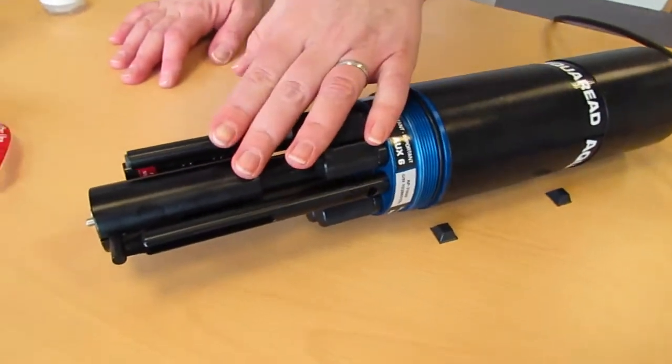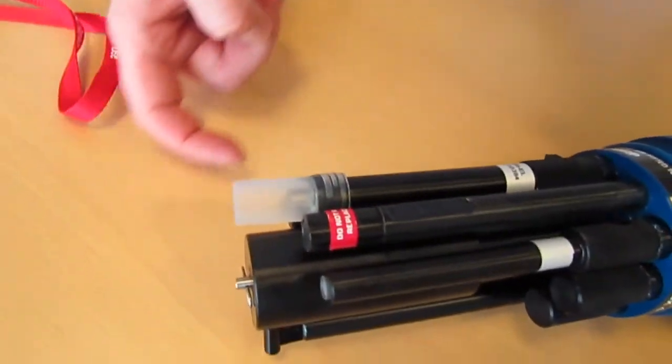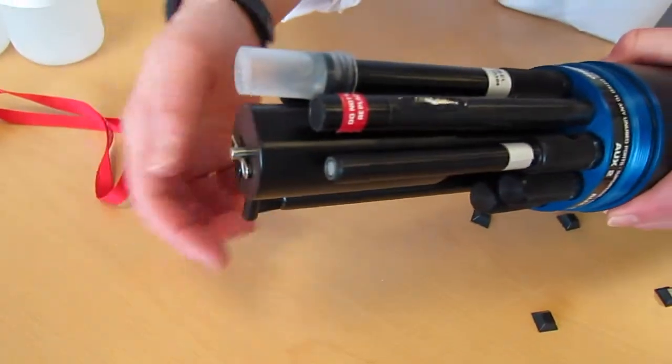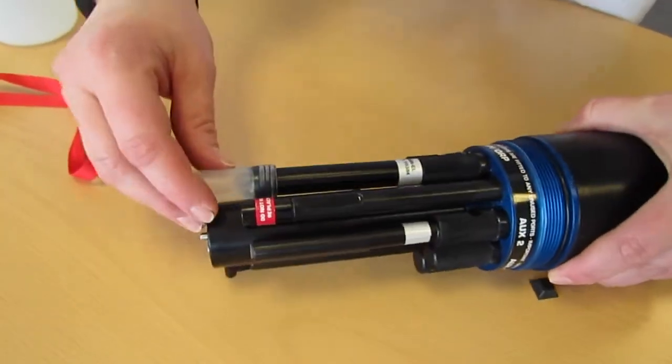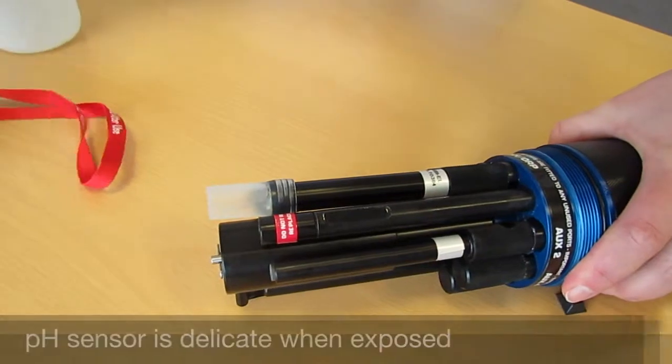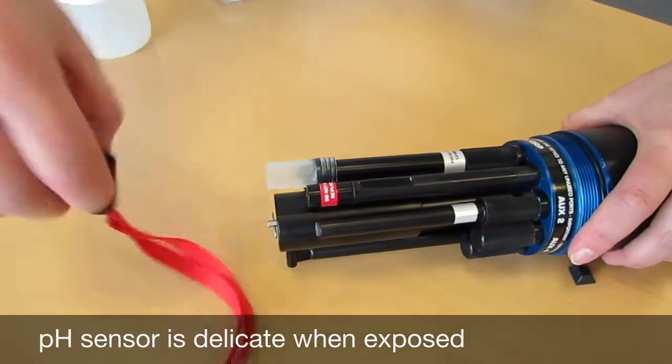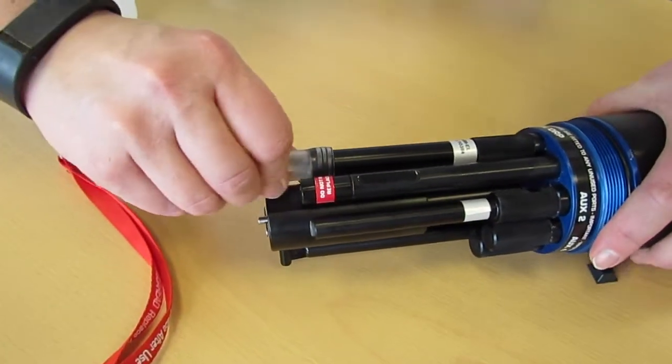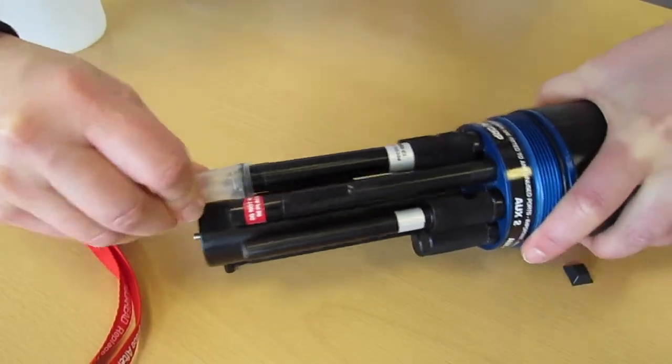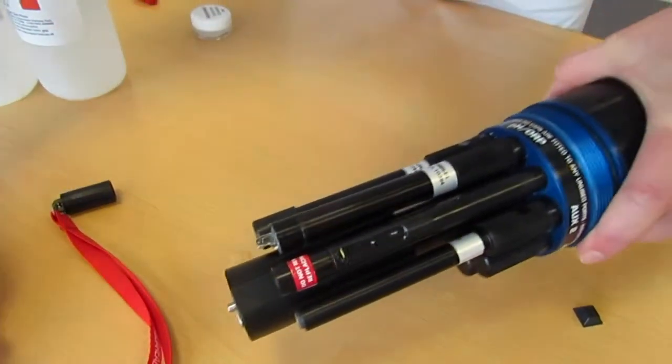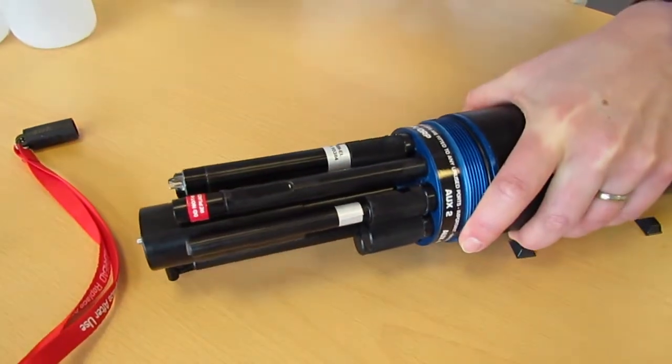Now before we use the wiper arm, we must make sure that there's a free flow around so that the wiper arm doesn't get jammed. So we need to carefully remove the pH cap. Now yours might look like this or it might have come like this. Let's carefully remove the cap to expose the combi electrode terminals.